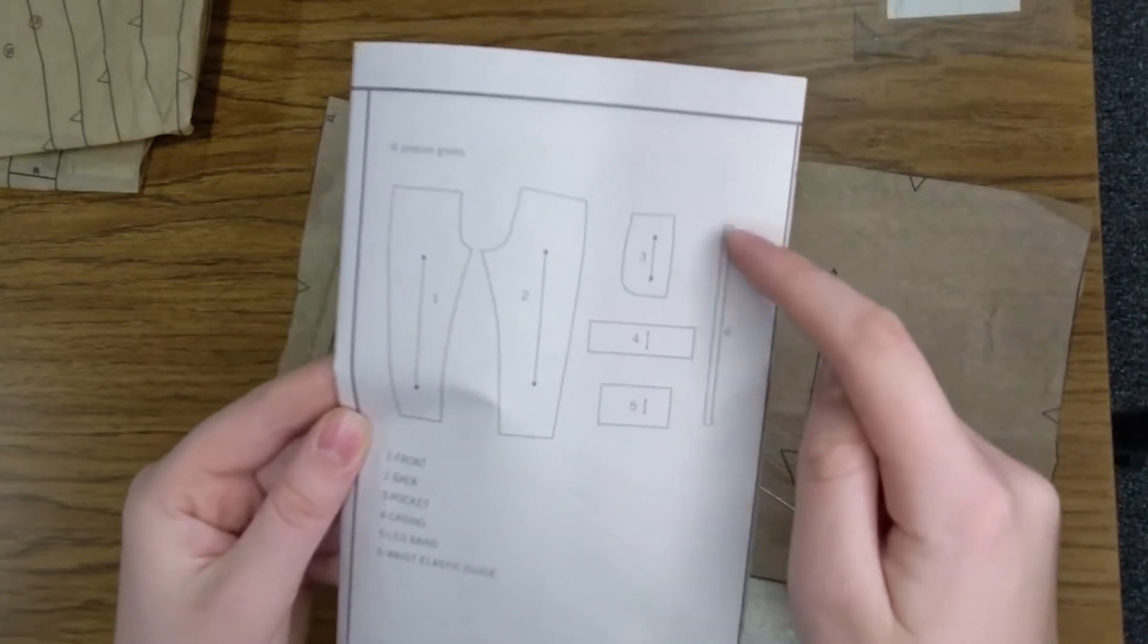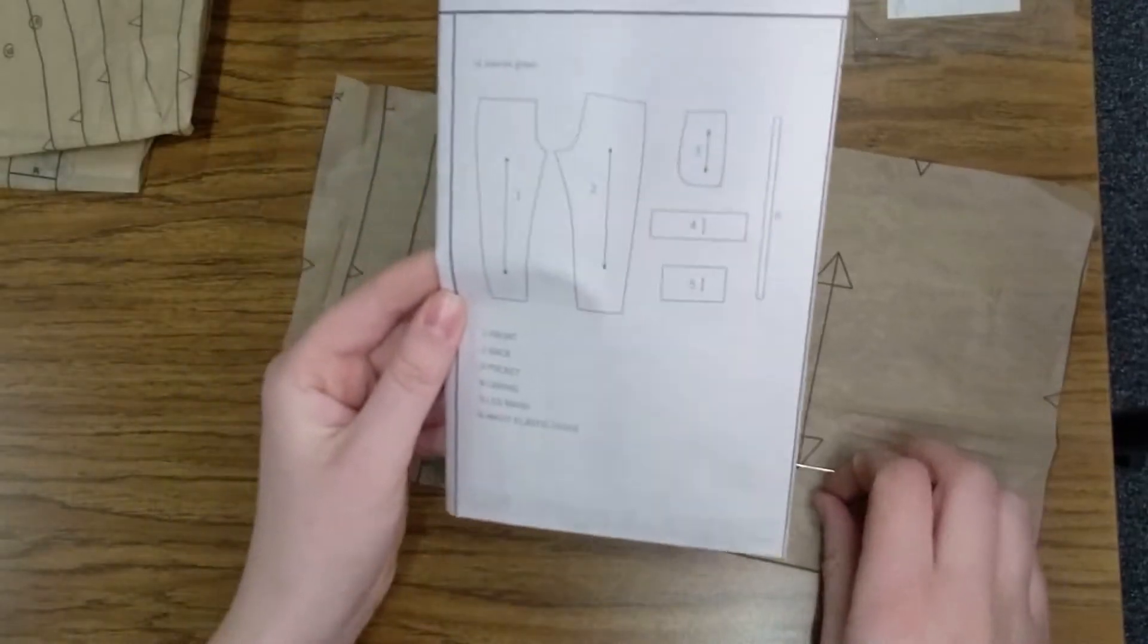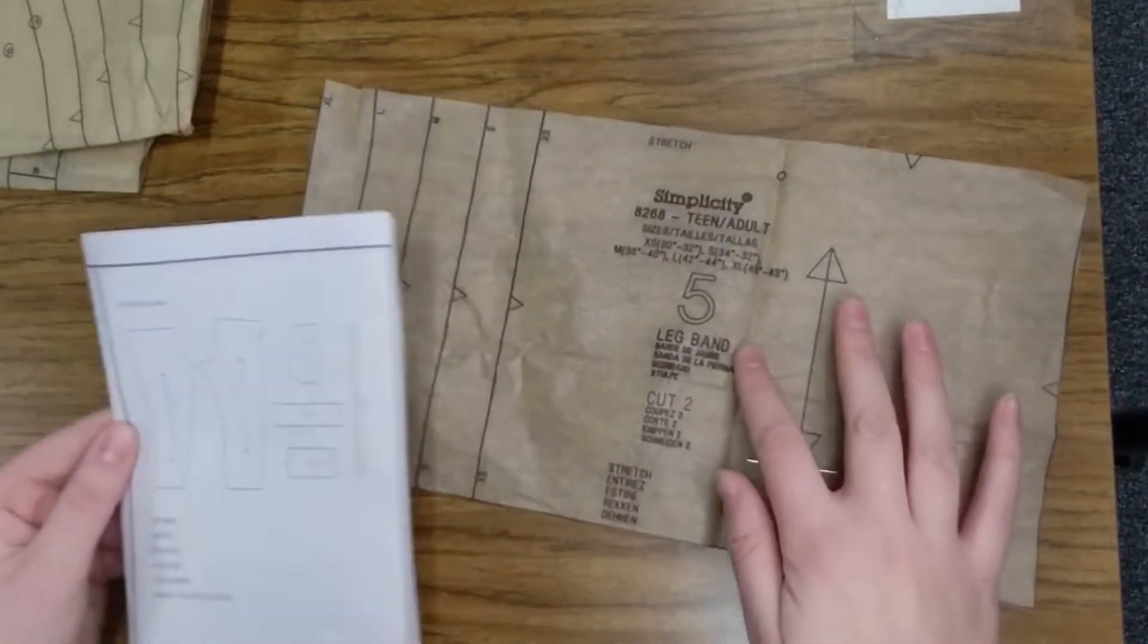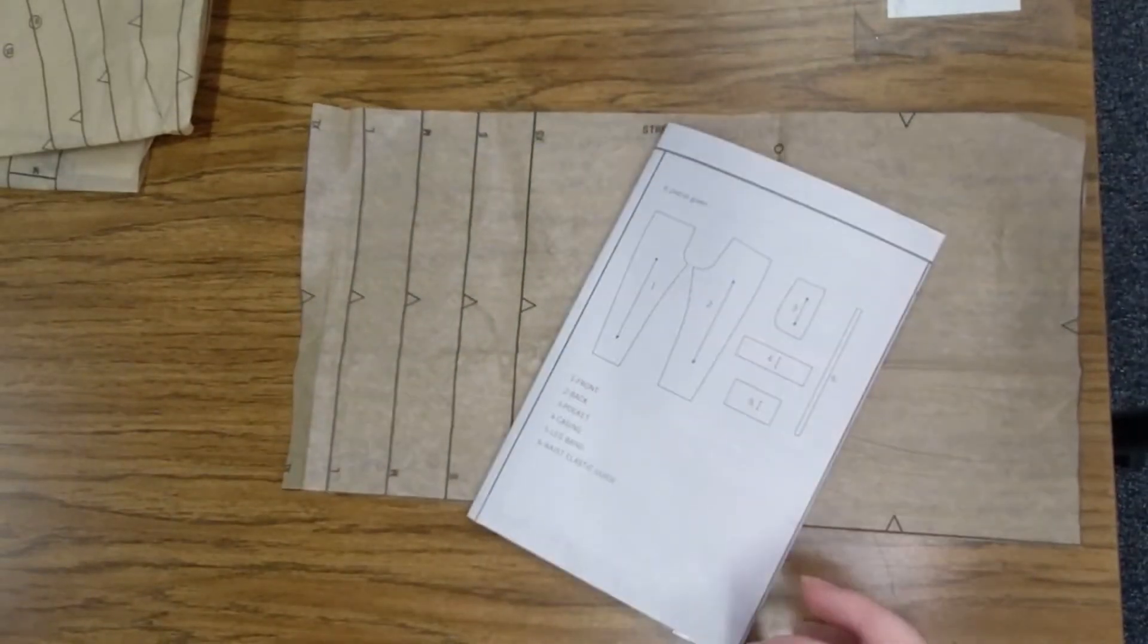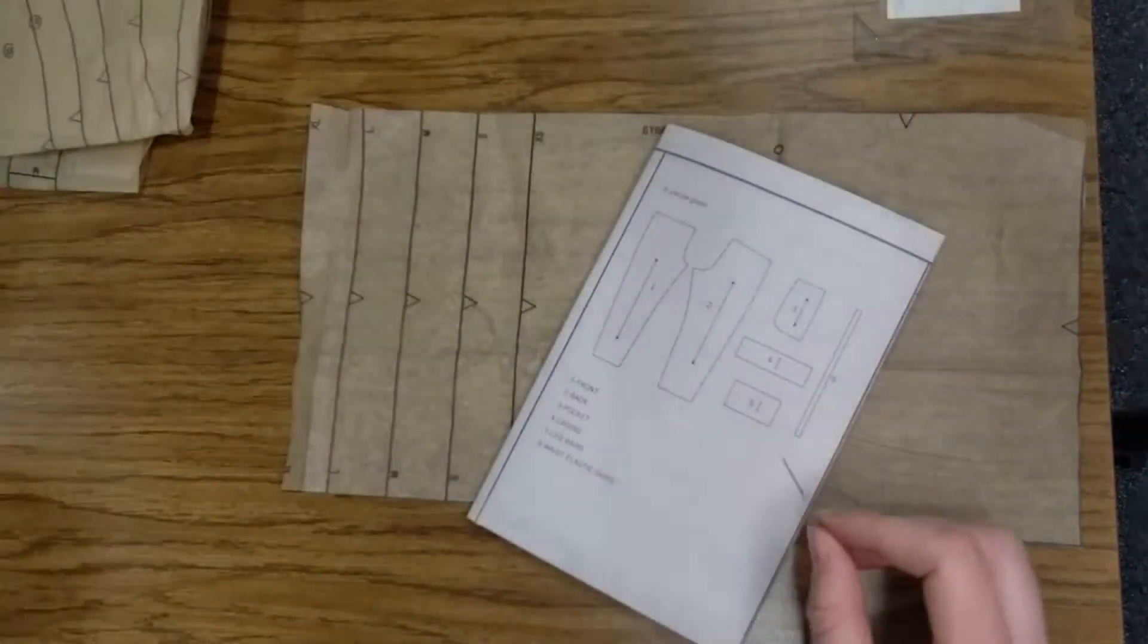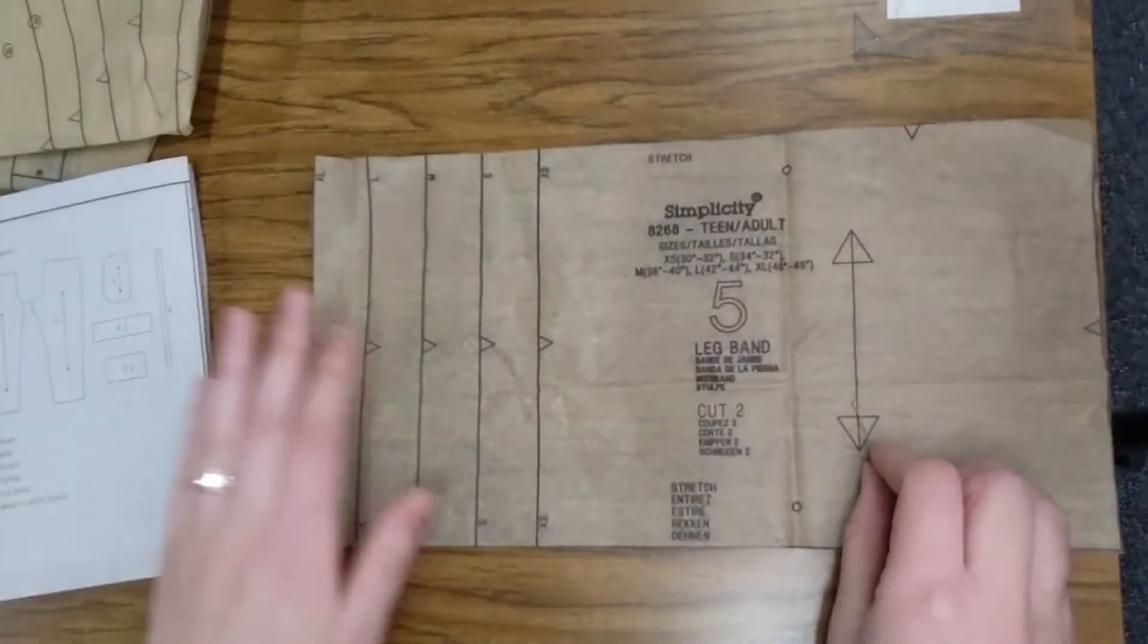This is not going to be cut out on our fabric. It'll be cut out on the elastic. But you need to cut out each of these pieces from your pattern tissue. So, what you're going to do now is find your size, which we already did, right? You find that size, and you're going to cut out that size of your pattern tissue.